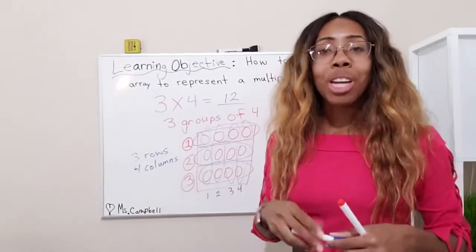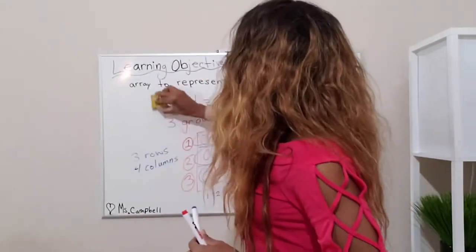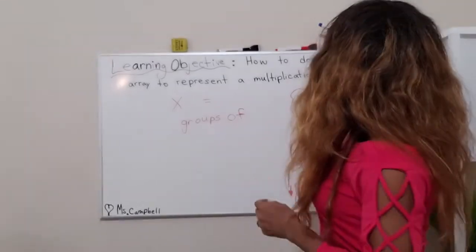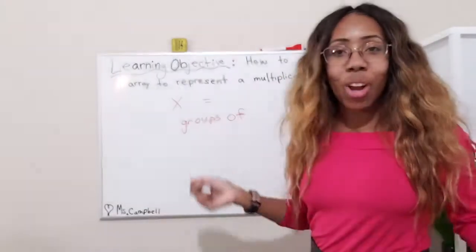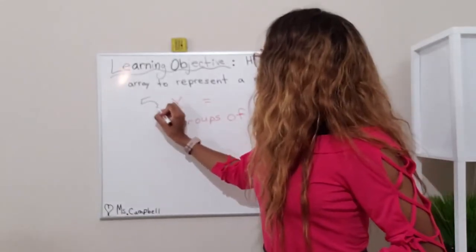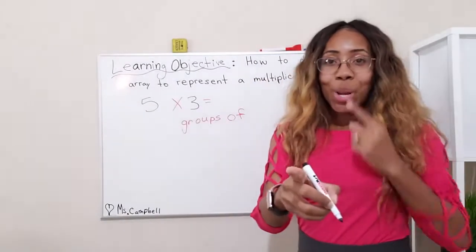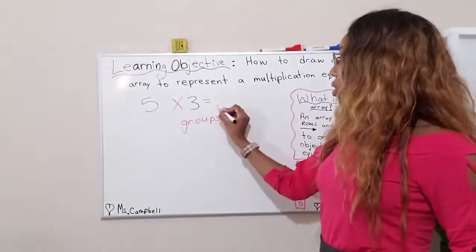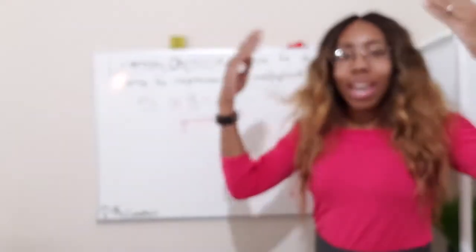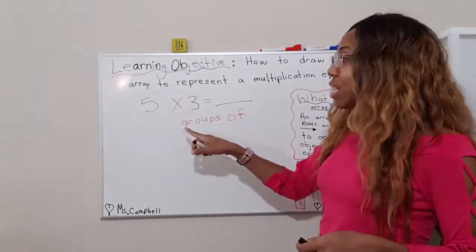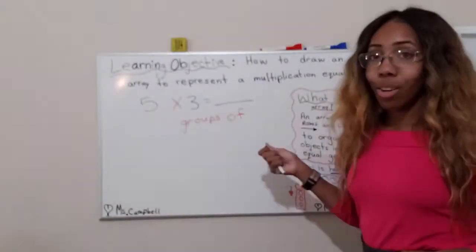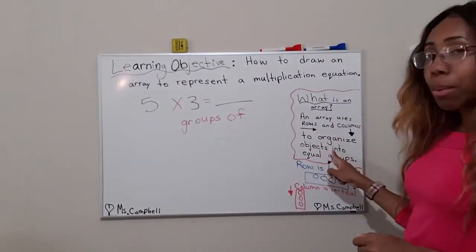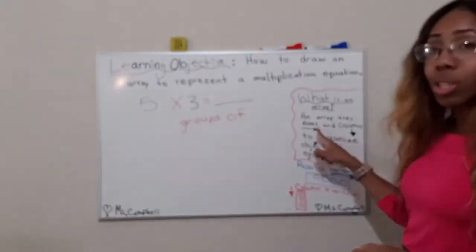I hope you understand that. If not, keep watching — I'm going to do another example. Let's try five times three. When we're using an array, we need to remember that these are equal groups. An array organizes objects into equal groups using rows and columns. So five times three means there are five groups of three.